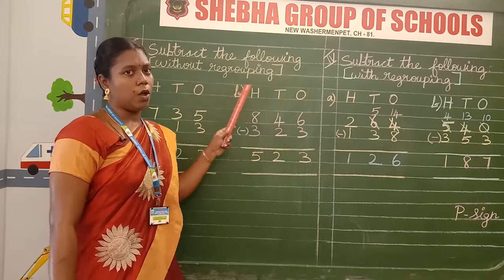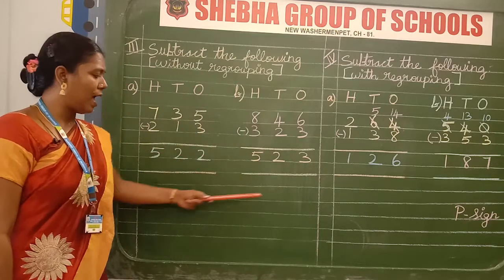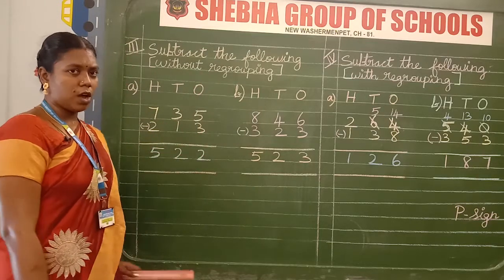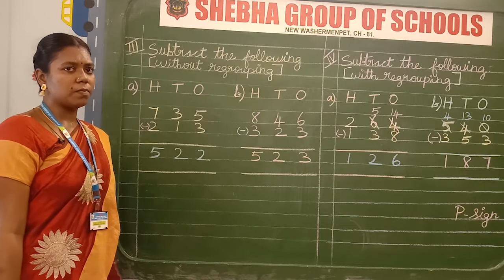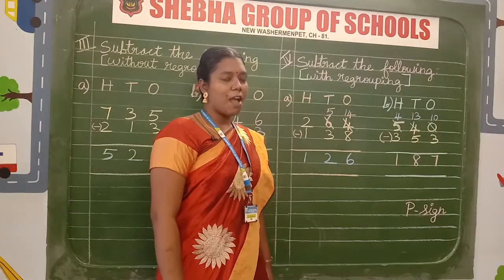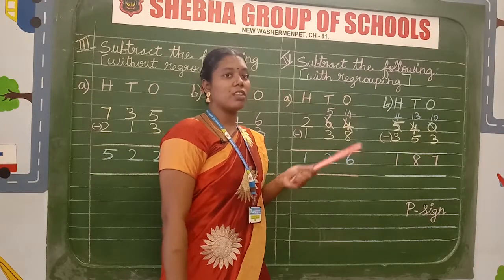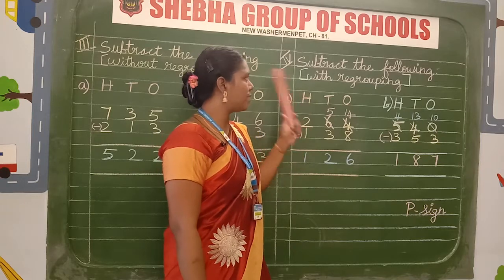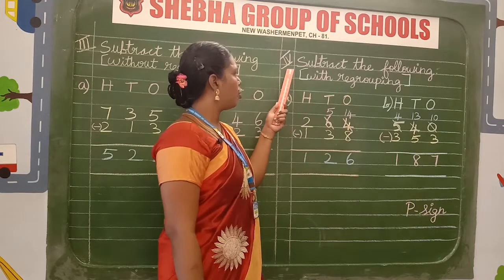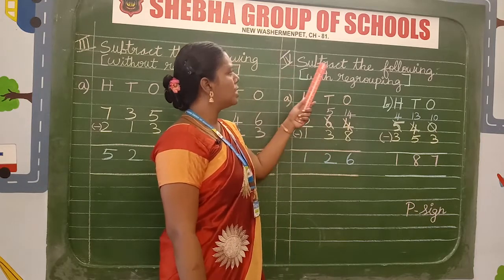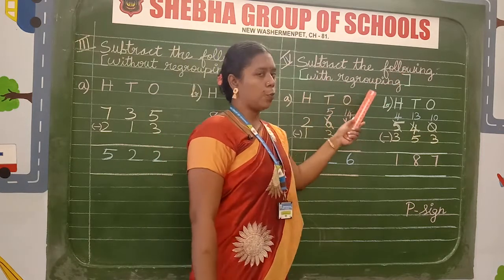This is the subtraction method for without regrouping. After finishing this Roman numeral, draw the line using a scale and pencil. Clear, children. After finishing the third Roman numeral, take a fresh page for the fourth Roman numeral. In this Roman numeral — the fourth Roman numeral — subtract the following with regrouping.